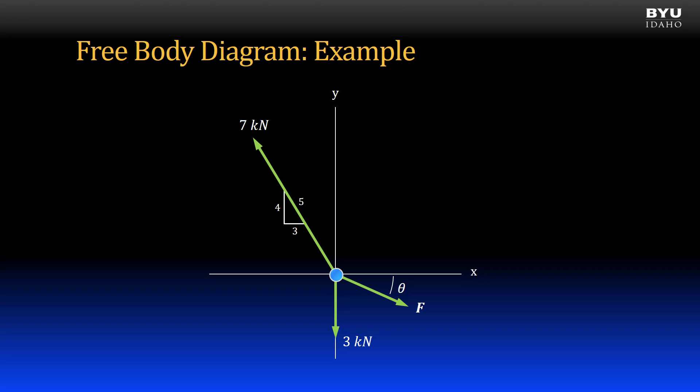Those are all the pieces of information I would need to solve this problem. I can see that I only have two unknown pieces of information, the magnitude of f and its angle from the x axis. We will see that with two unknowns in a single free body diagram we should be able to solve for them.